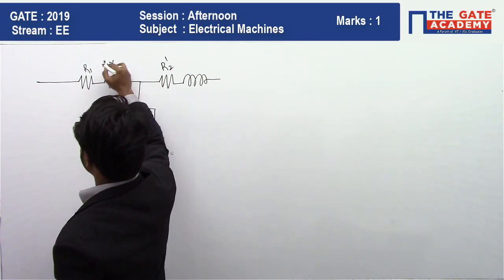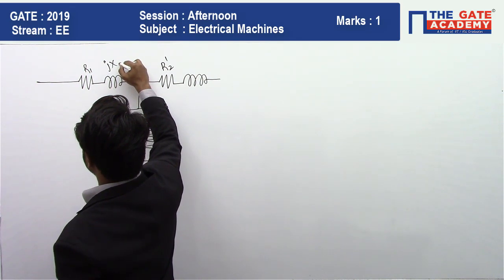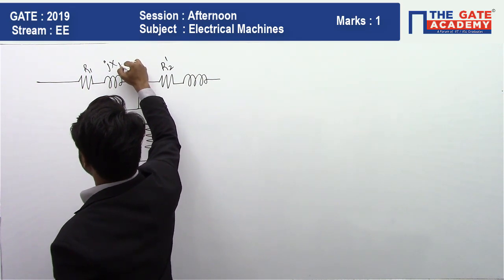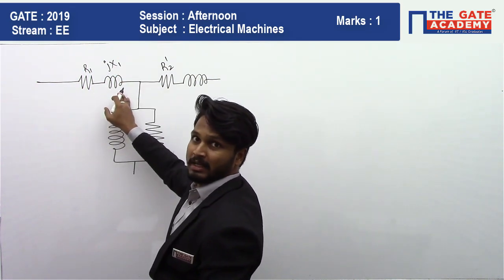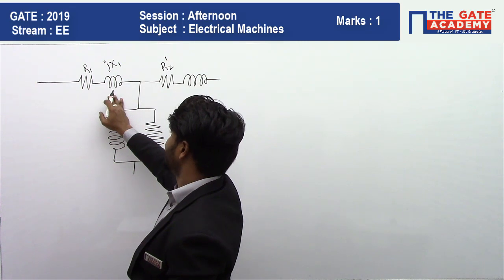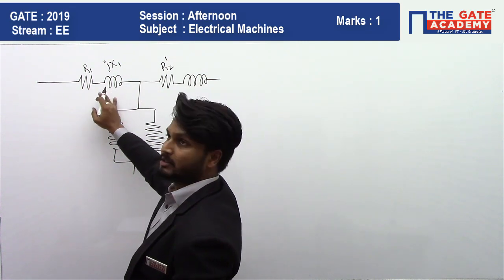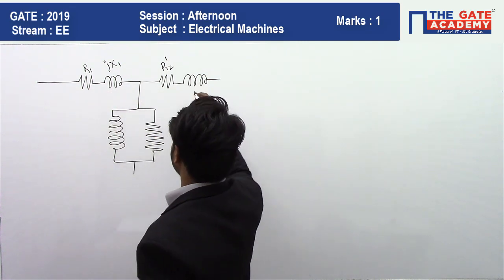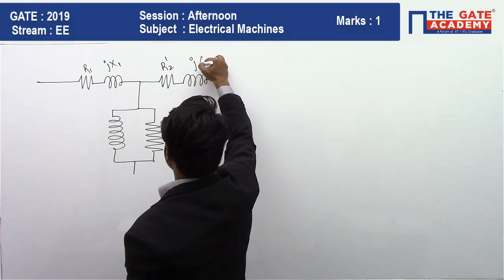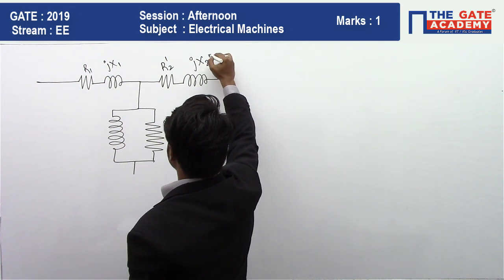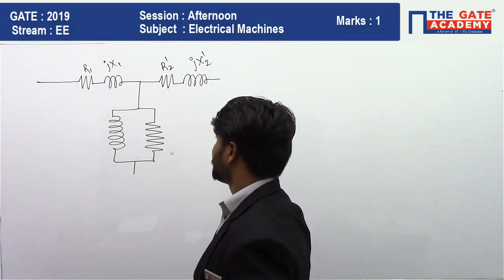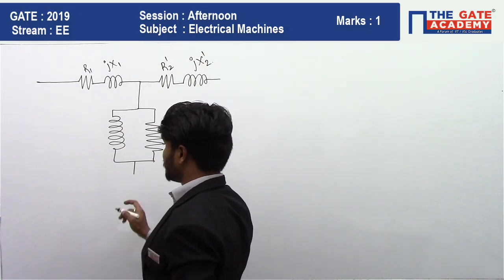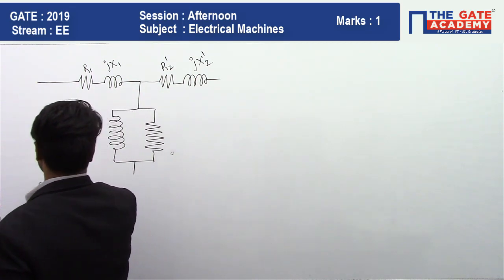This is the stator winding resistance, this is the stator leakage reactance X1, and this is the rotor air-gap leakage reactance X2 dash referred to the stator side.